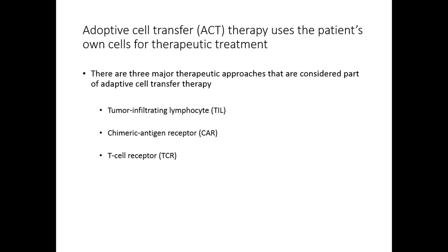There are basically three major therapeutic approaches considered part of adoptive cell transfer therapies. The first one is tumor infiltrating lymphocytes. The second one is the chimeric antigen receptor, or CAR. And the third one is using T cell receptor.